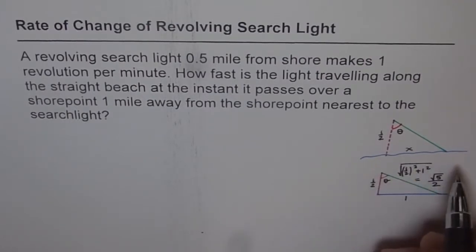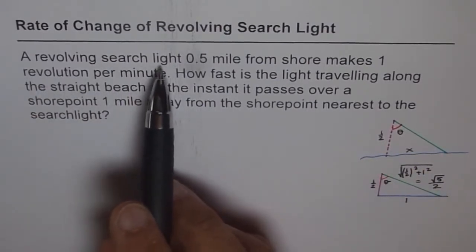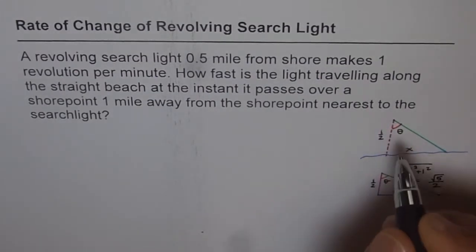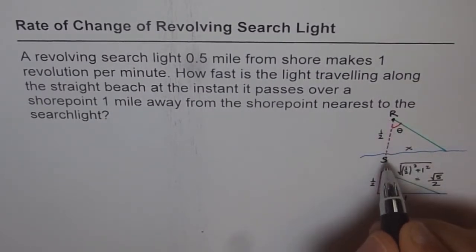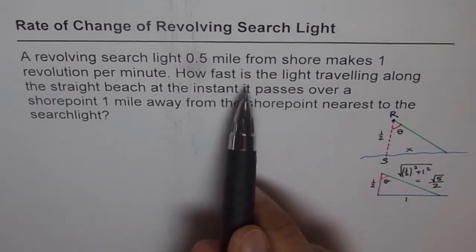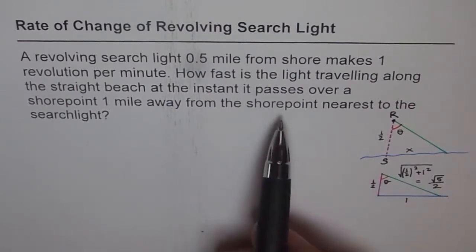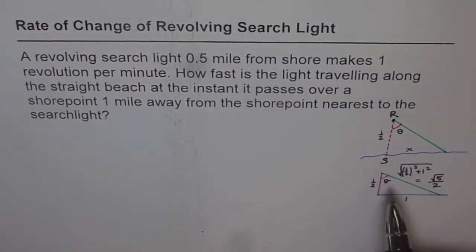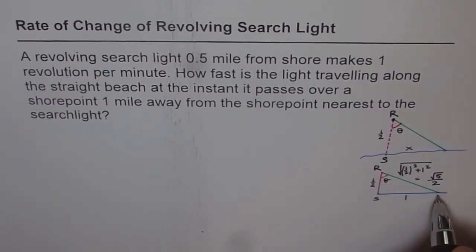I have made a diagram to illustrate the situation. The shore is represented by the blue line, and the revolving light is at point R. The distance from R to the shore point S is half a mile. We select a point P on the shore which is one mile away from S, forming a triangle.